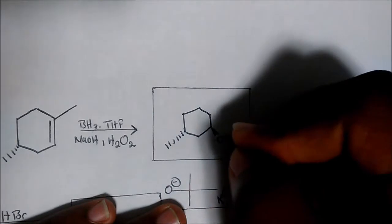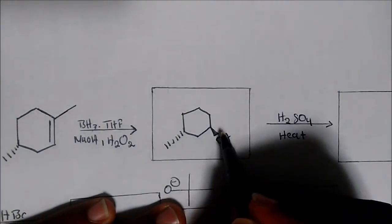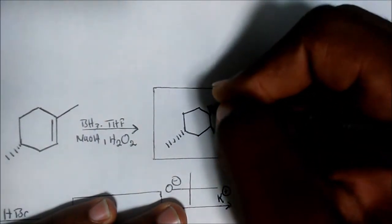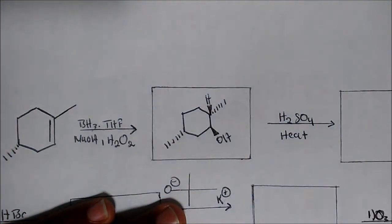And this is for practice, so you could pause if you didn't kind of do your thing. So you get the OH being on the least substituted part of the alkene. Now remember, because there's syn addition, notice that OH and hydrogen are on the same side. So this will be the product.